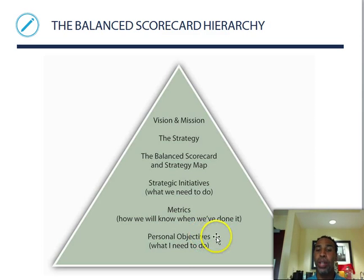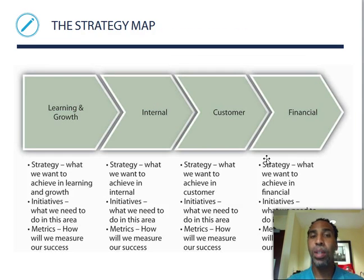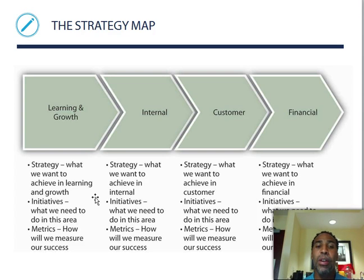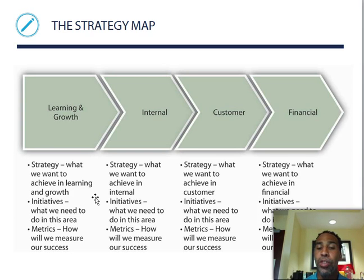The balanced scorecard covers four perspectives: learning and growth, internal processes, customer, and financial. For each perspective you define a strategy — what do we want to achieve — initiatives — what we need to do — and metrics — how will we measure our success. This structure applies consistently across all four perspectives.